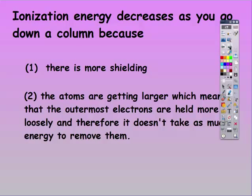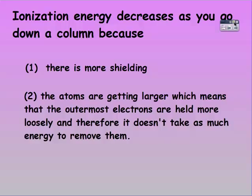Ionization energy decreases as you go down a column because there's more shielding. The atoms are getting larger, which means that the outermost electrons are being held more loosely and therefore it doesn't take as much energy to remove them. So as the atoms get larger, there's less pull from the positive nucleus.